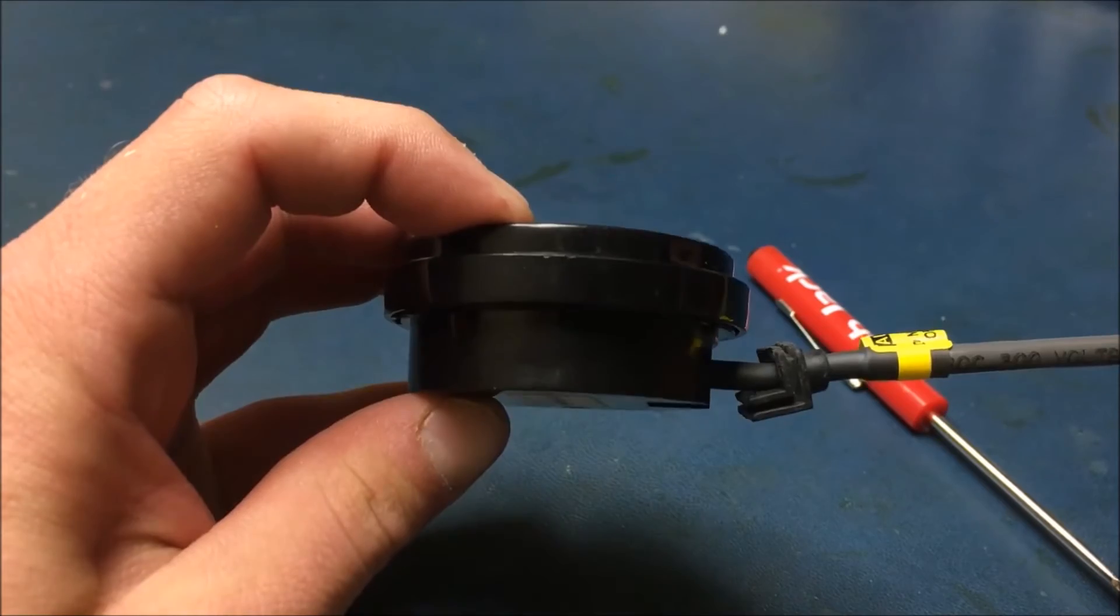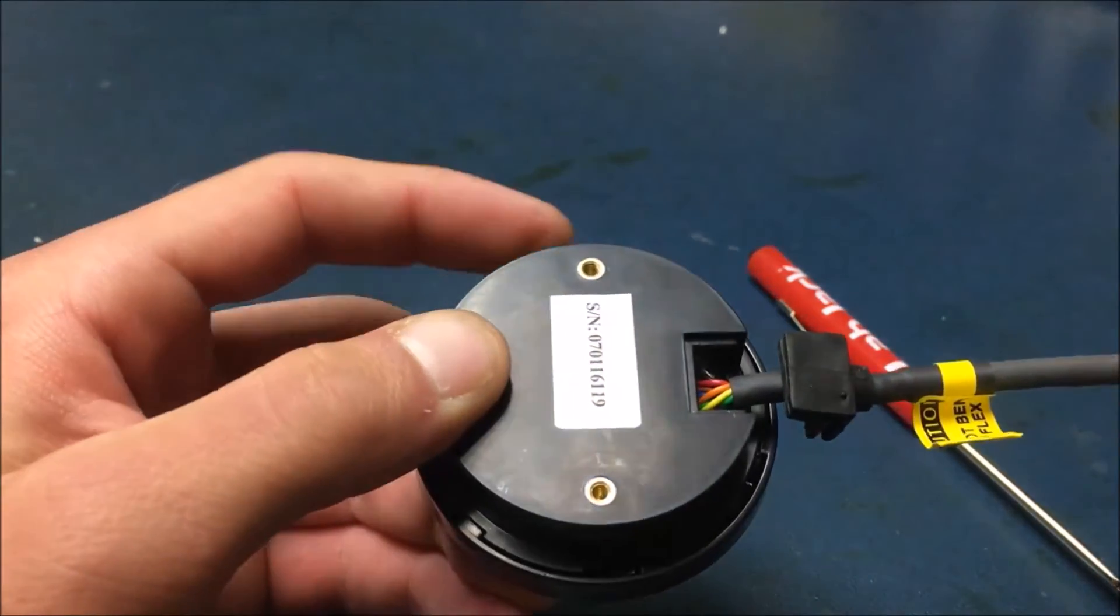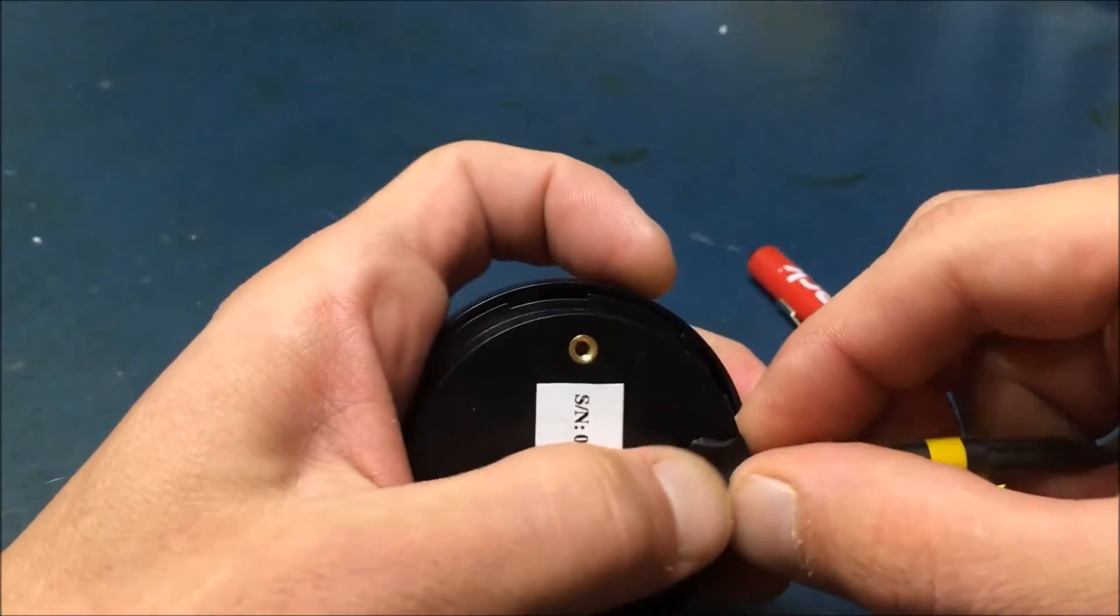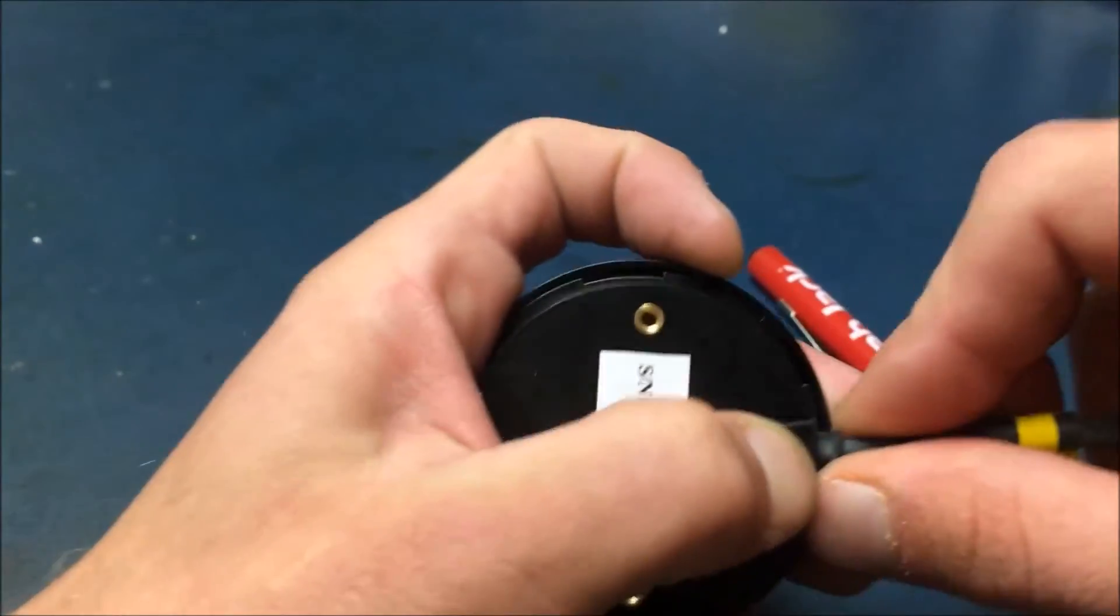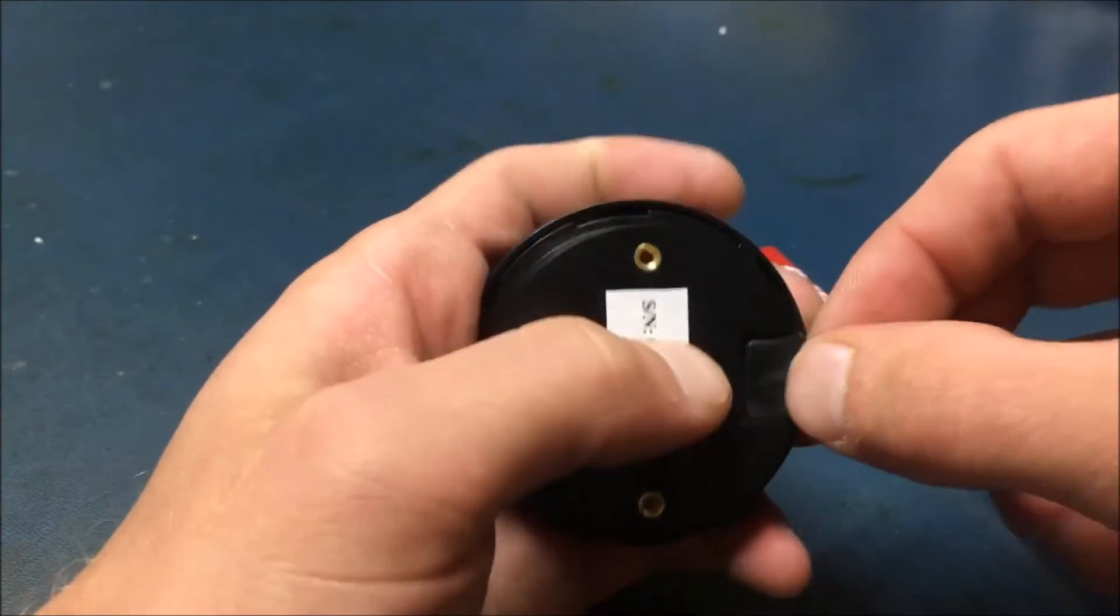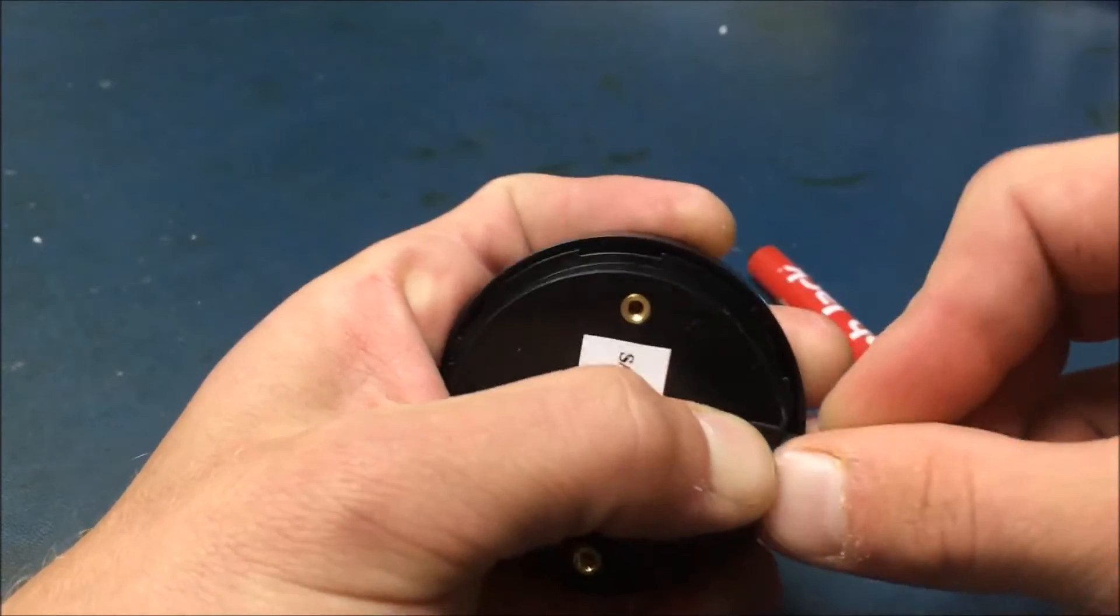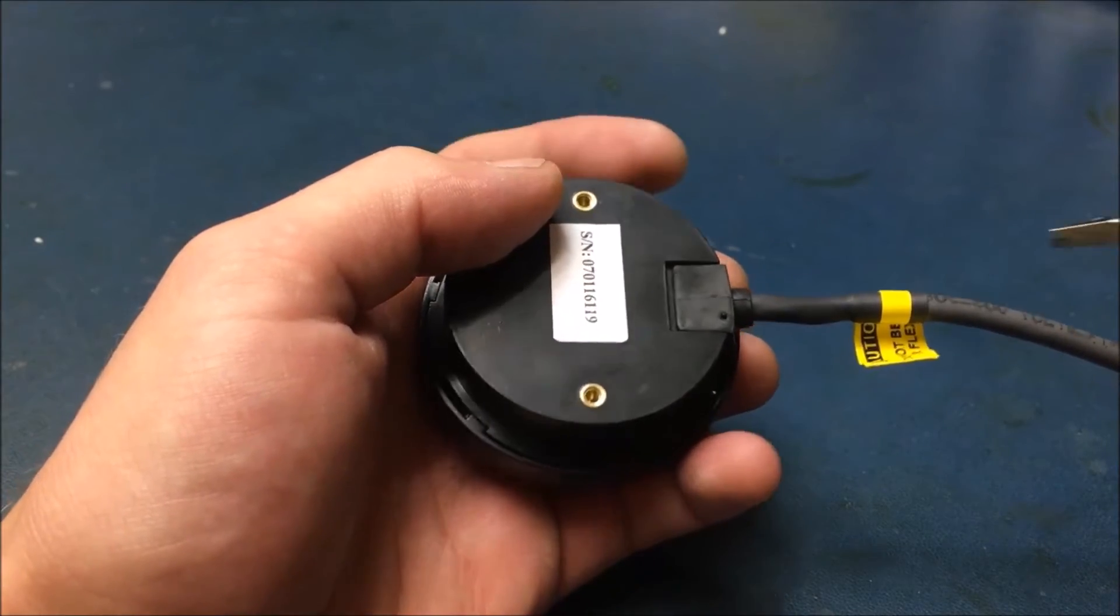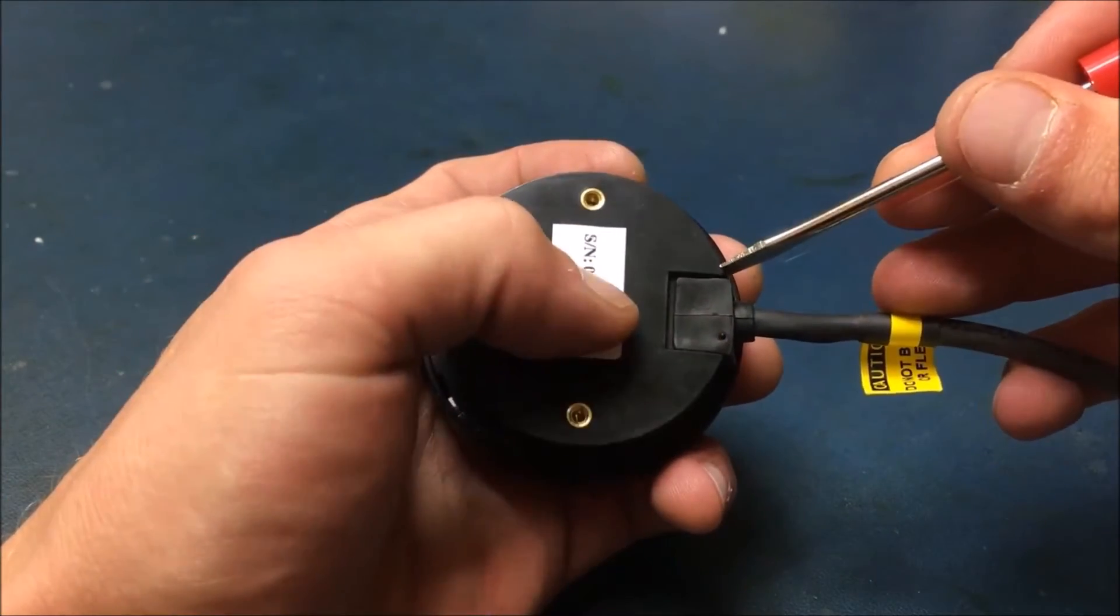Then switch the cable so it exits the top and push the grommet back towards the body of the gauge. Get it as tight as you can, then again with the small screwdriver go around the grommet seating it on the lip of the gauge.